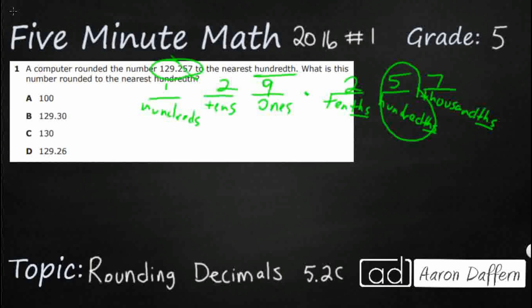So what we need to look at are two boundary numbers, and this is how we learn to do rounding in third grade. So what we're looking at here is we are looking at 129.25 and 129.26.